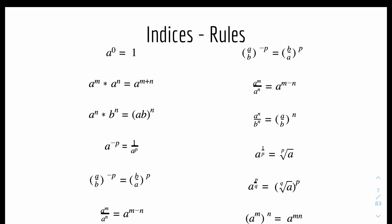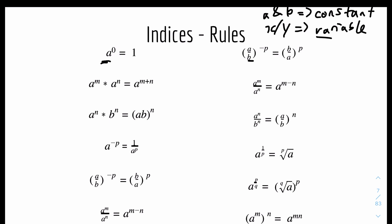We have quite a lot of rules for indices. You'll notice there are letters like A or B — these are constants, so they could be any numbers like 1, 2, 3, 4, and they remain constant throughout the whole equation or expression. X or Y are variables, so they can vary.